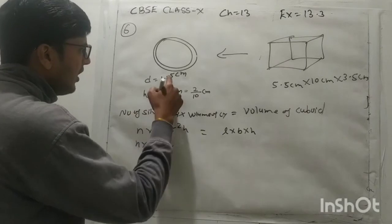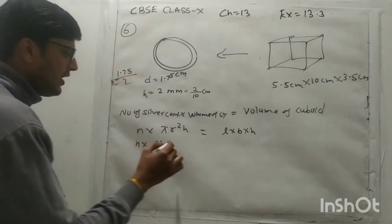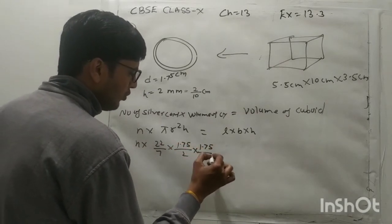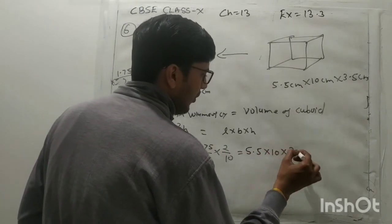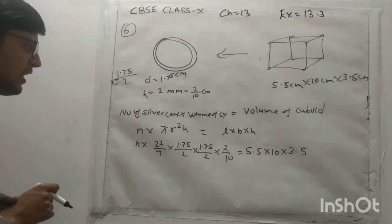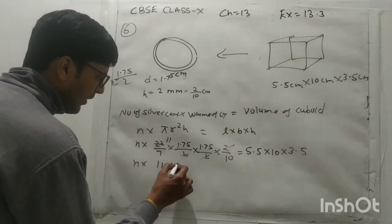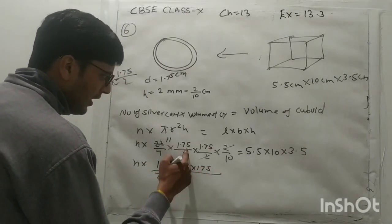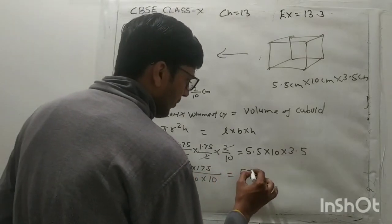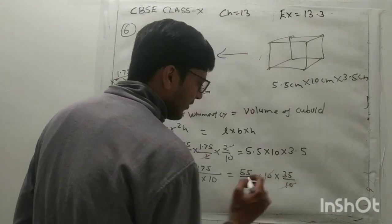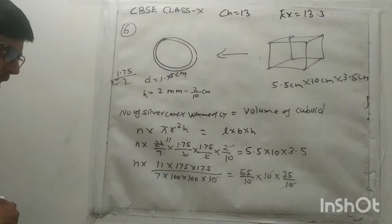So simply it is n and it is 22 upon 7, so radius is 1.75 upon 2 because diameter is 1.75, so radius is half of this, so it is 1.75 upon 2 into 1.75 upon 2, multiply with height it is 2 upon 10, equal it is 5.5 into 10 into 3.5. Now so 2 cancels out, 10 cancels out.